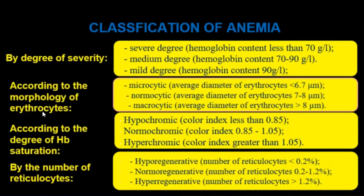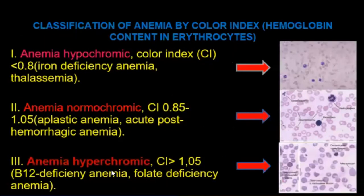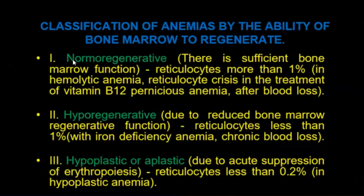According to morphological characteristics of erythrocytes: micro-, normo-, and macrocytic. According to degree of hemoglobin saturation: hypochromic, normochromic, and hyperchromic. By number of reticulocytes: hypo-regenerative, normal, and hyperregenerative. Morphological classification: macrocytic anemia, normocytic, and microcytic anemia. Classification by color index: hypochromic, normochromic, and hyperchromic. By ability of bone marrow to regenerate: normal, hypo-, and hypoplastic or aplastic.